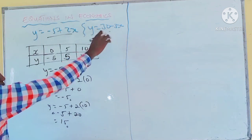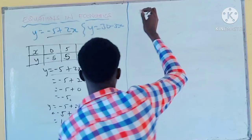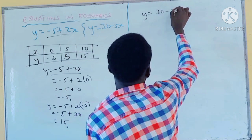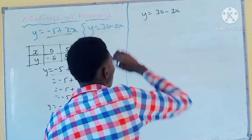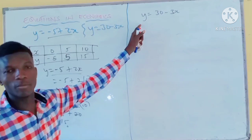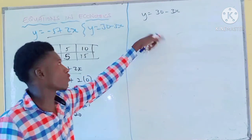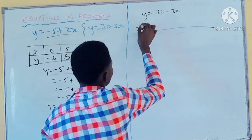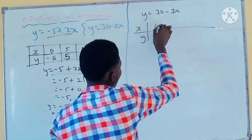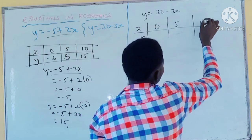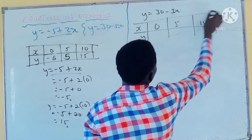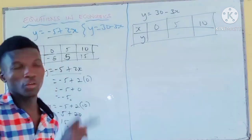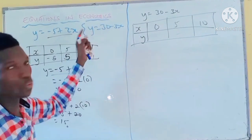From there we go for the other one: y is equal to 30 minus 3x. You also need to find this one before you plug them in the graph. You assume the numbers x is 0, 5, and 10. You need to be consistent here because you are using 0, 5, 10 — always use the same values since there are two equations attached.